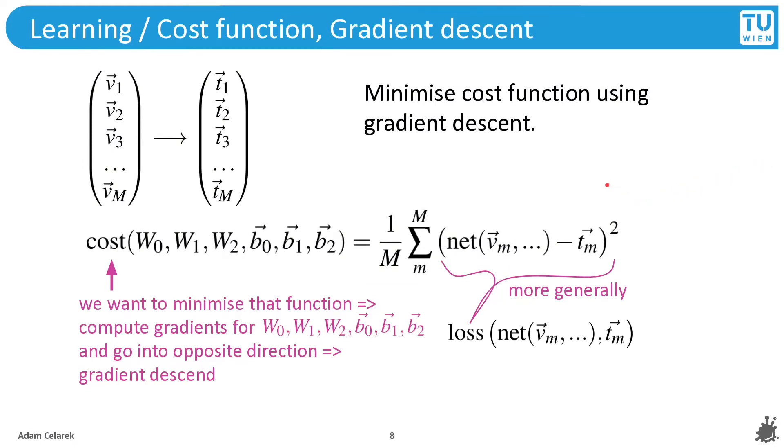What about the cost function? Here we see a simple example of a cost function. This is the mean square error. You see we have the output of the network here. We subtract the target, we take the power, and we take the mean. This is only one possibility for a loss function. Depending on whether you have classification or something else, your loss function will change.